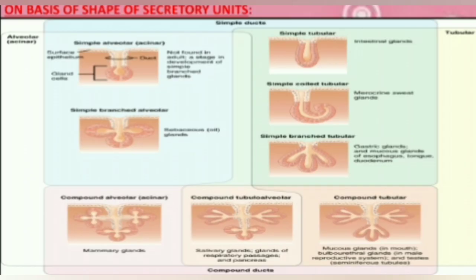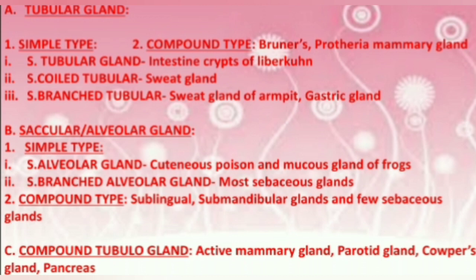On the basis of the shape of secretory units, glands can be of mainly three types: the alveolar glandular epithelium, the tubular glandular epithelium, and the compound tubular glandular epithelium. The tubular glandular epithelium can also be divided into two types: simple and compound.